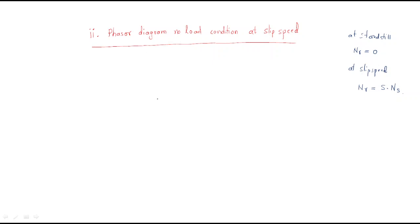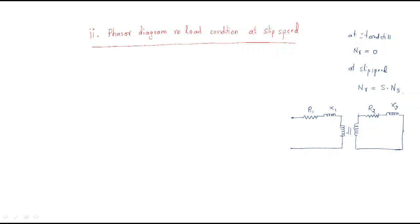For any phasor diagram we should follow the equivalent circuit. The equivalent circuit has a stator with resistance R1 and reactance X1 connected to the stator winding. Power is transferred from the stator winding to the rotor winding, which has rotor resistance R2 and rotor reactance X2. This is the circuit of the three-phase induction motor. Using this, we will draw the phasor diagram, with V1 as the supply voltage and EMFs generated in the primary and secondary windings.